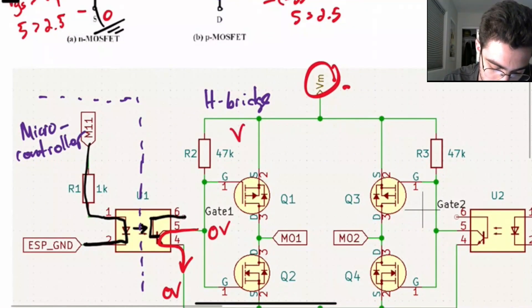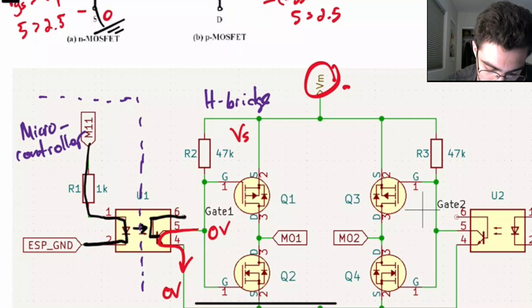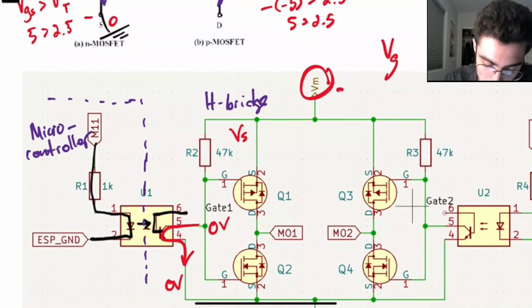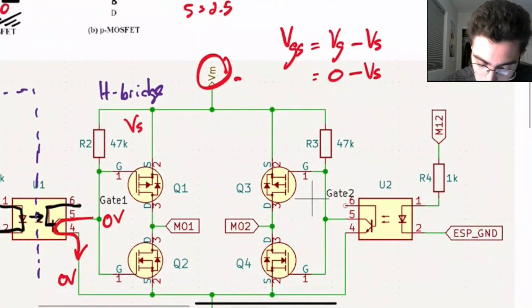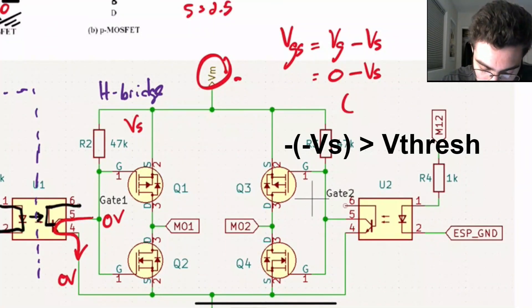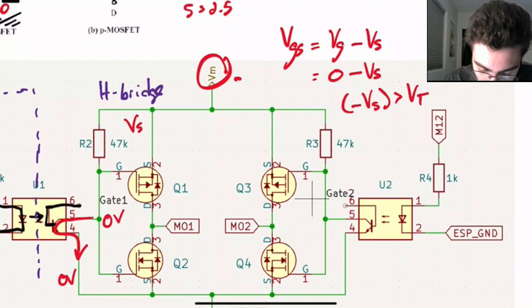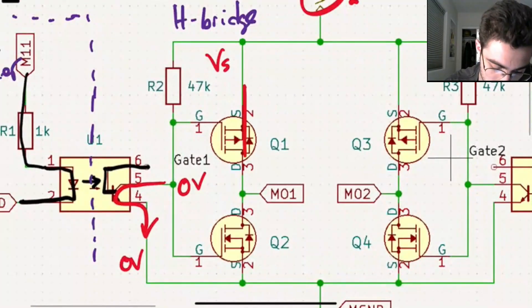And we know from before that if we have, we'll call this Vs, because this is the source of the PMOS, and 0 volts at the gate of the PMOS, then Vgs is going to be Vg minus Vs is equal to 0 minus Vs. And we design our circuit such that negative Vs will be greater than the threshold of the PMOS. So then the PMOS will conduct.